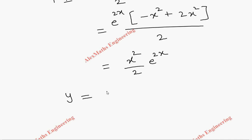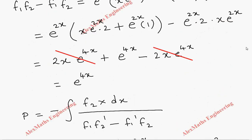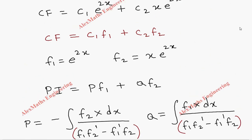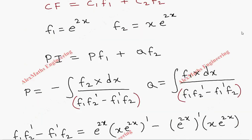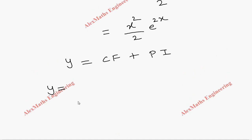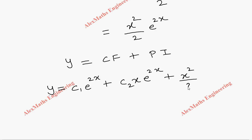Finally, the complete solution is CF plus PI. So y equals c1 e^(2x) plus c2 x e^(2x) plus x²/2 times e^(2x).